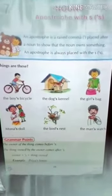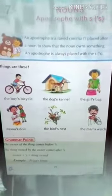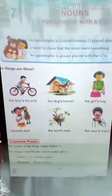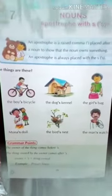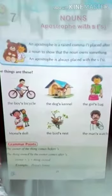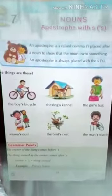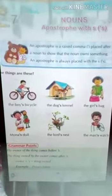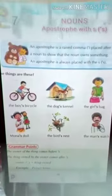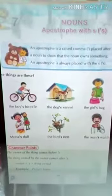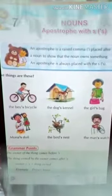Dear students, an apostrophe is a raised comma, placed after a noun to show that the noun owns something. An apostrophe is always placed with the S — apostrophe S.